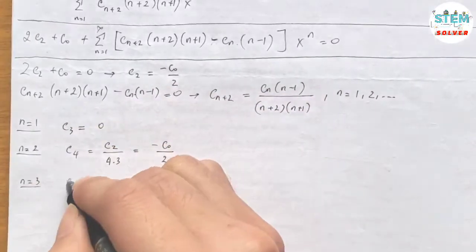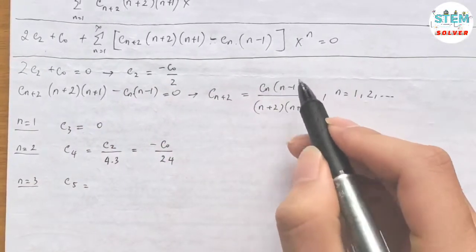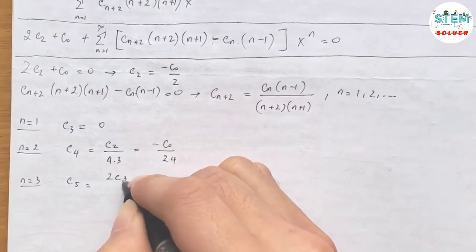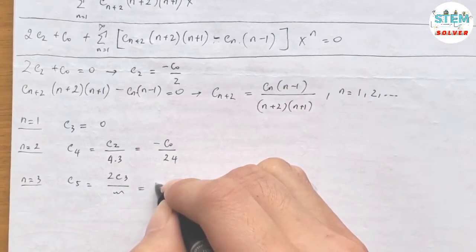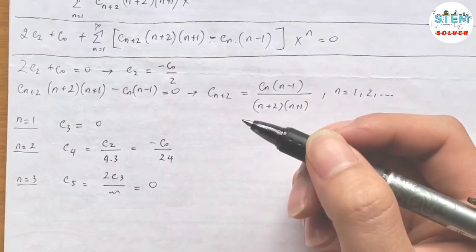Then when n equals 3, plug in 3, I have c5 equals 2c3. And c3 equals 0. So I don't care what on the bottom is because the answer is just 0.